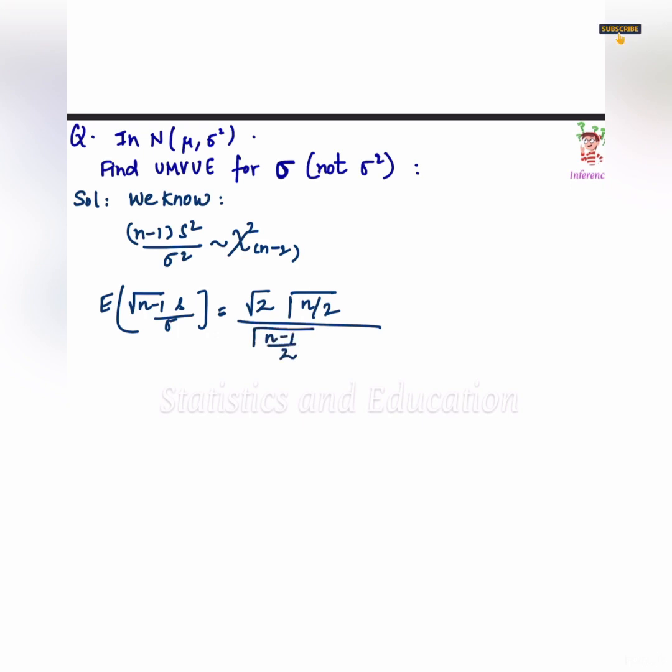So, if you solve it, this is what you get. And we have seen this a lot of times that s is a sufficient and complete estimator for sigma. Why? Because sufficient estimator has one-to-one invariance property, and for sigma, see any estimator is complete for a family of distributions.